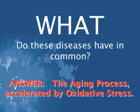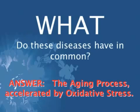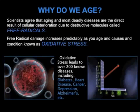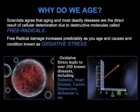What do these diseases — specifically cancer and heart disease — have in common? The answer is the aging process. These are diseases that are typically of aging, and they're accelerated by oxidative stress. Oxidative stress is the term used for excessive free radical damage. The prevailing theory now on the aging process is this free radical equation. Scientists agree that aging and most deadly diseases are the direct result of cellular deterioration due to destructive molecules called free radicals.